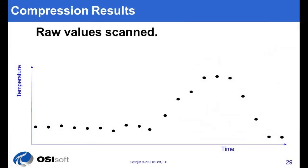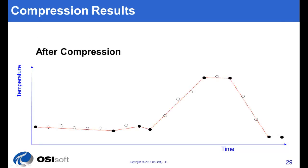So that's exception and compression. You start with raw values, then you apply exception, then you apply compression. The trend that comes up in ProcessBook or PI Coresight fully represents the fidelity of data within the instrument precision.